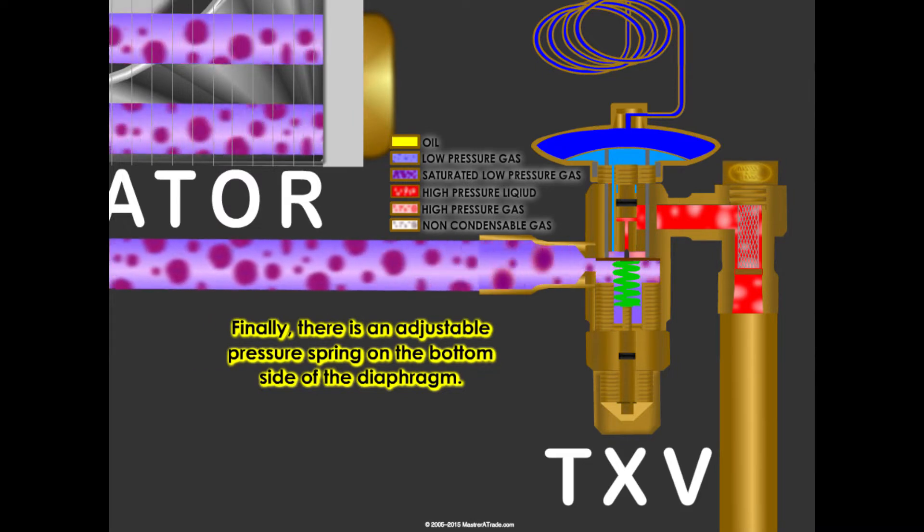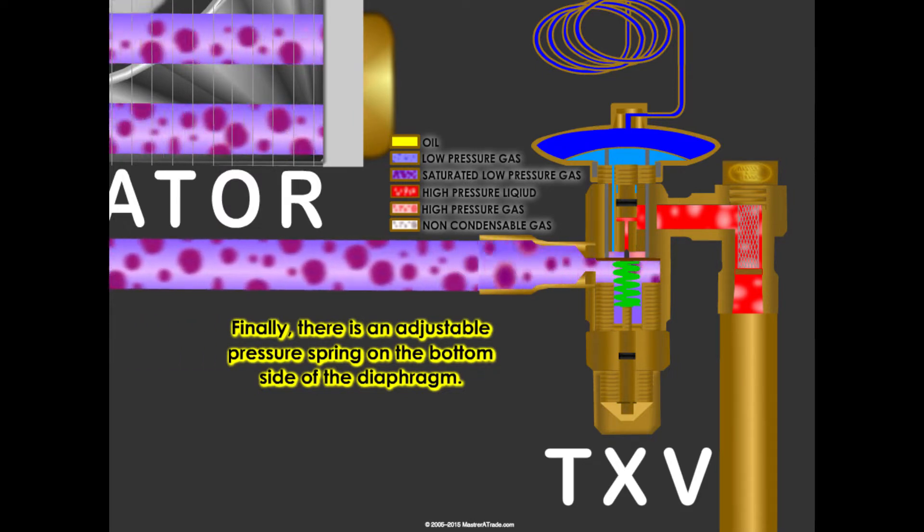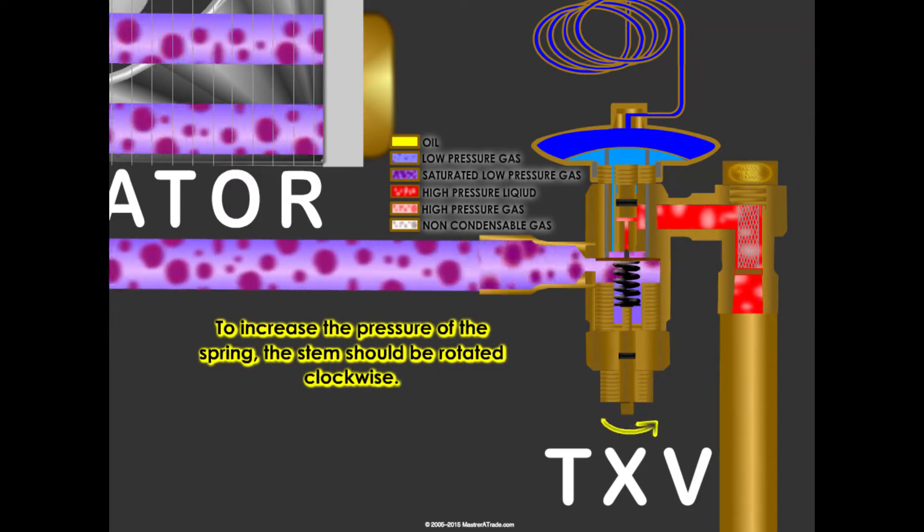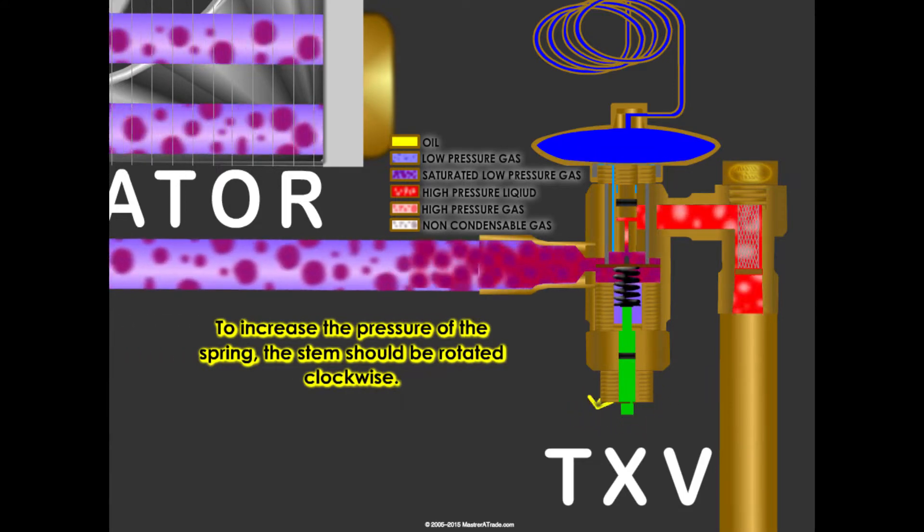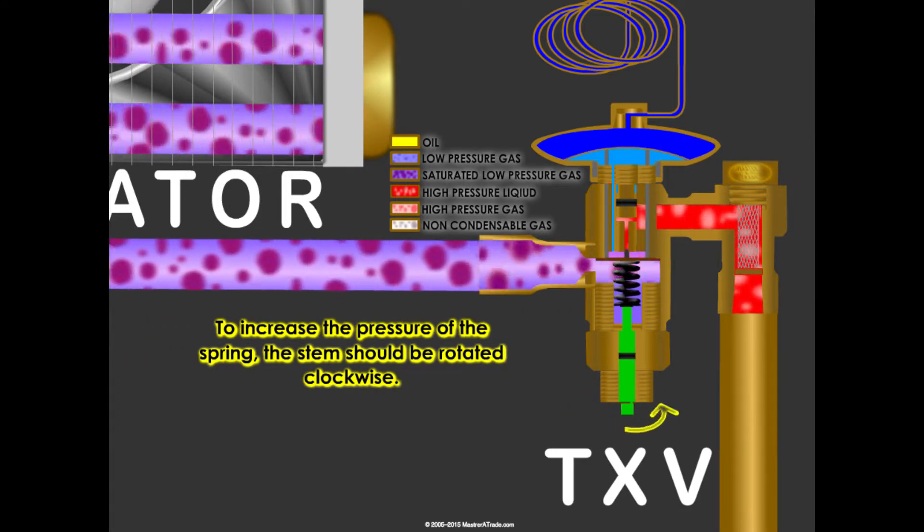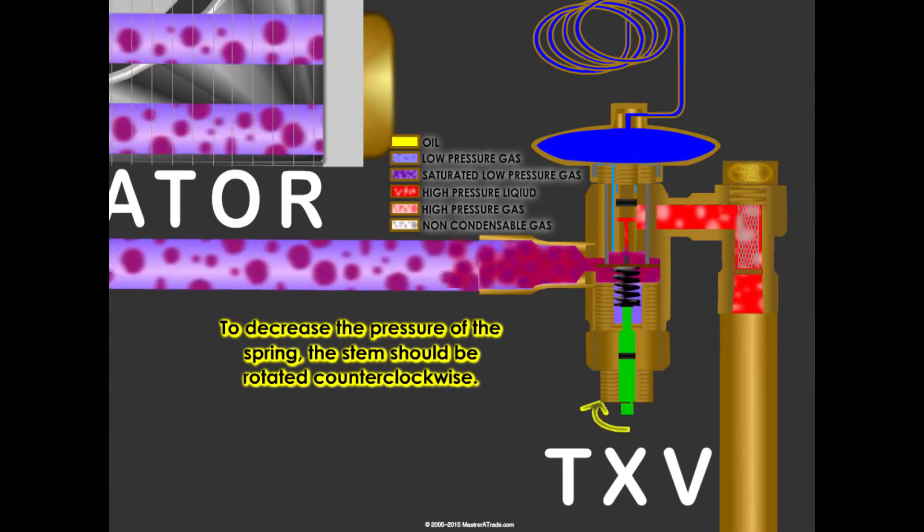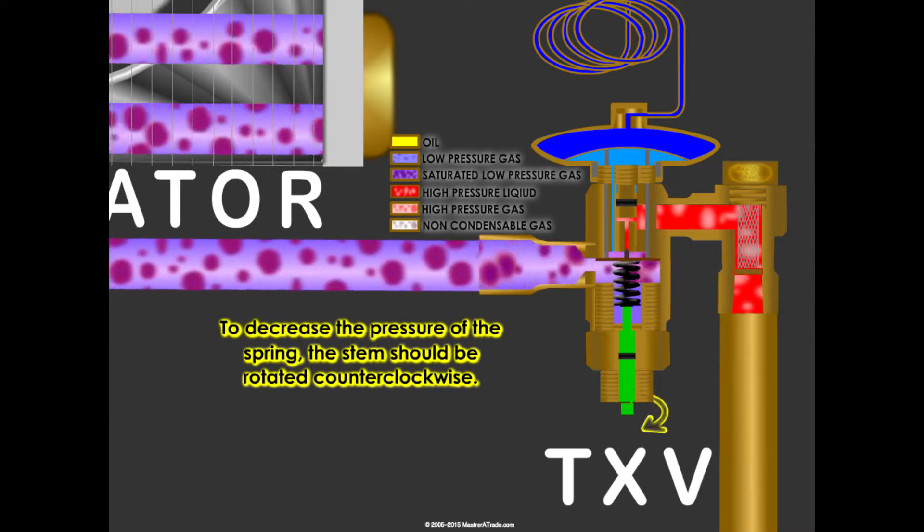Finally, there is an adjustable pressure spring on the bottom side of the diaphragm. To increase the pressure of the spring, the stem should be rotated clockwise. To decrease the pressure of the spring, the stem should be rotated counterclockwise.